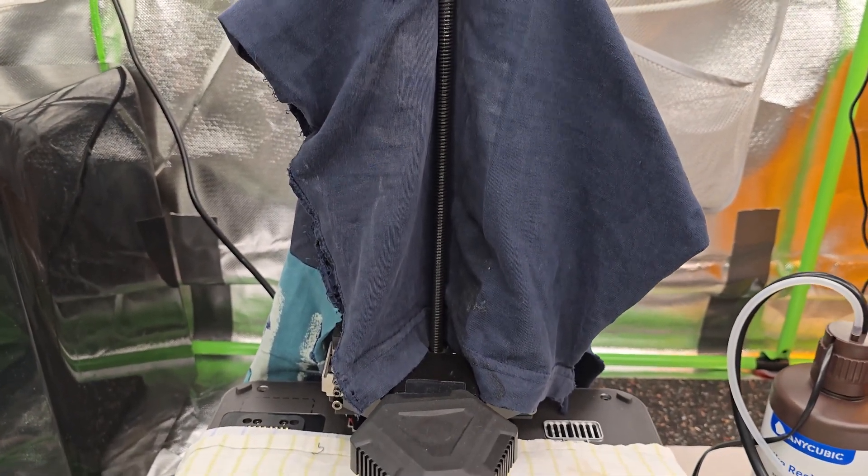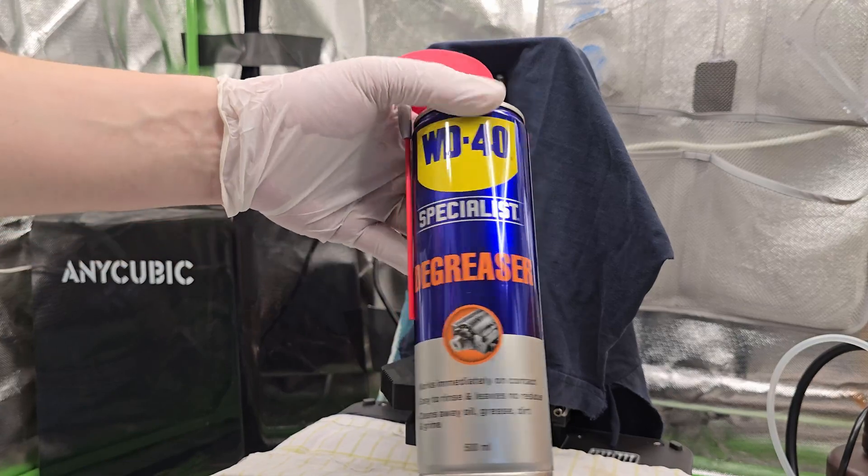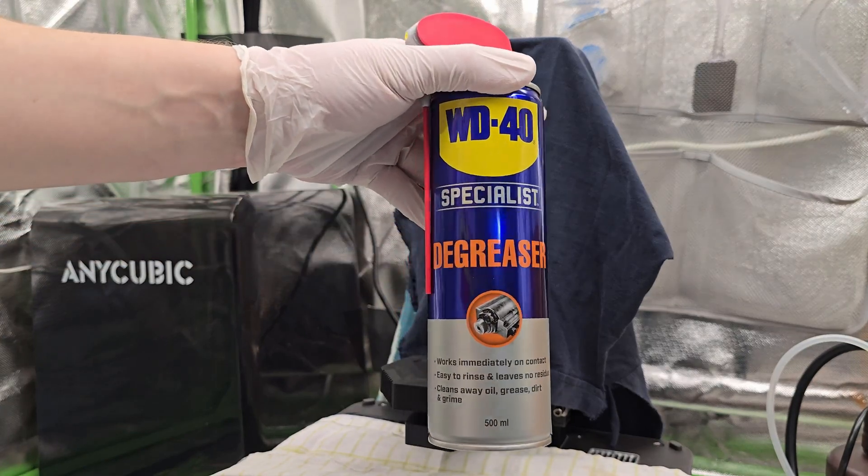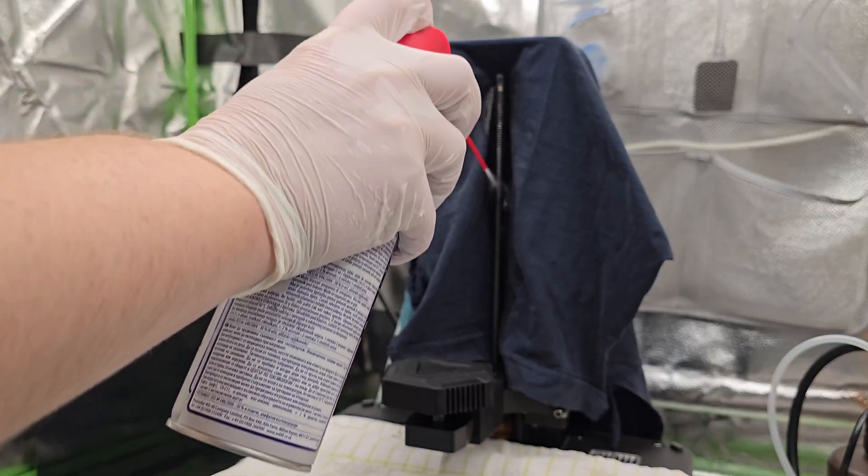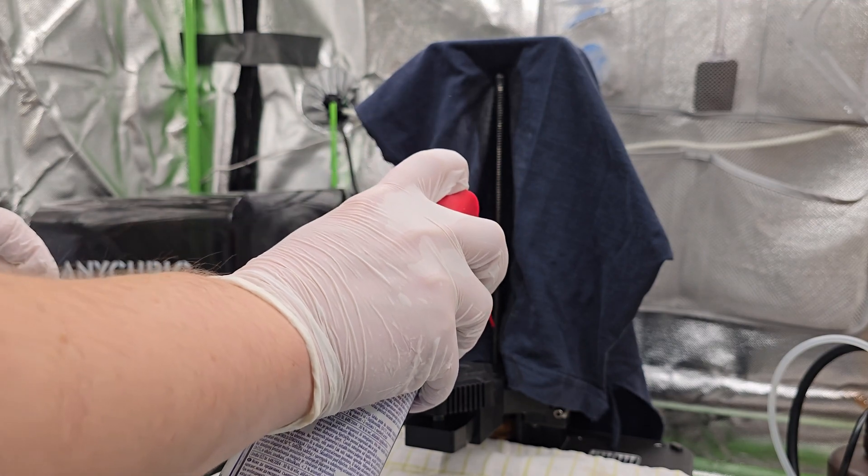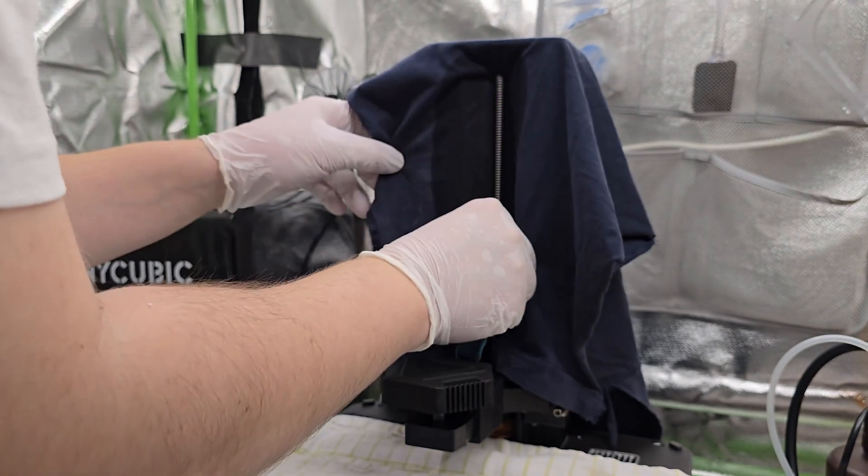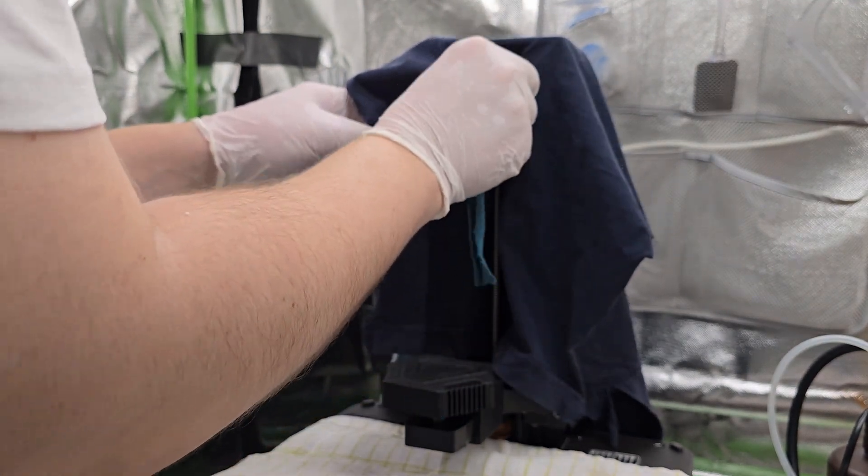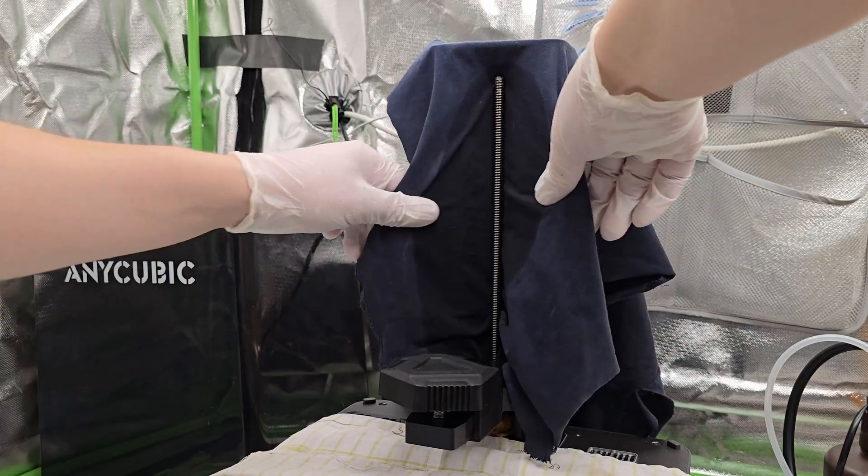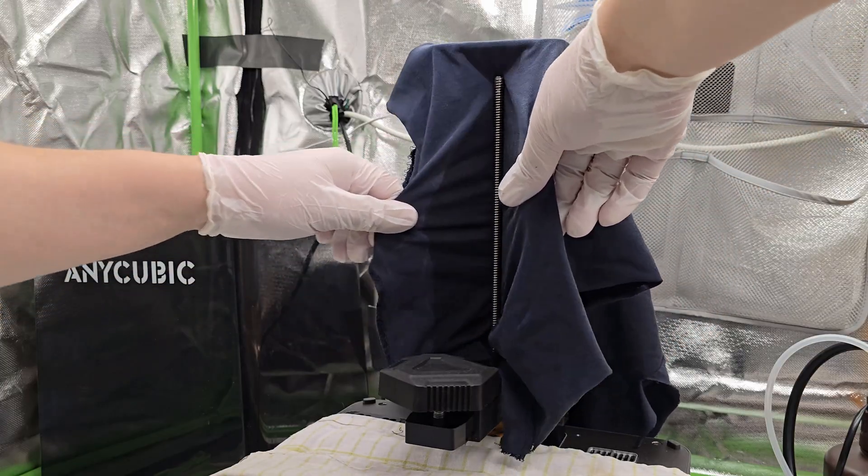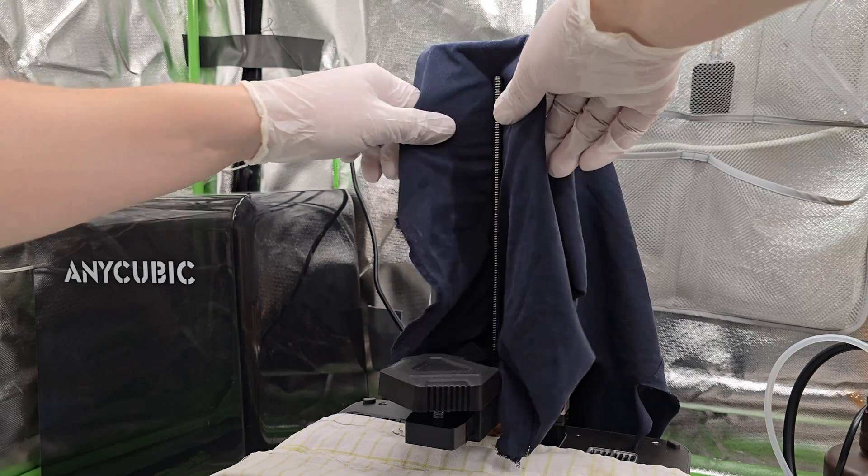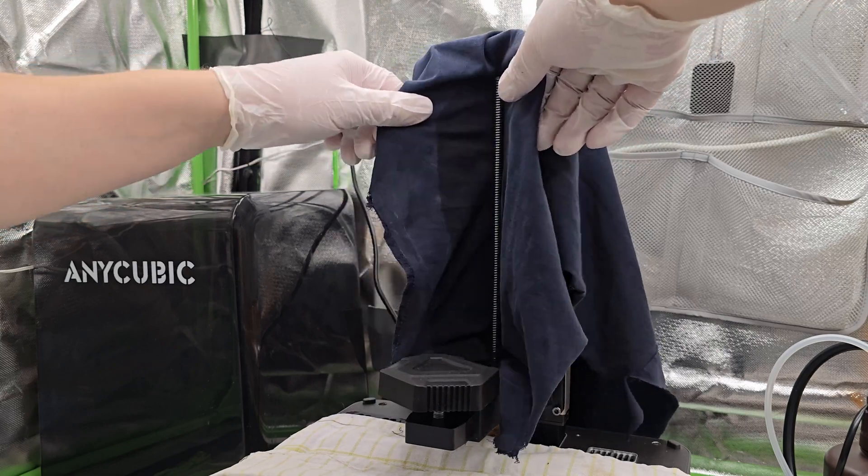So let's start by cleaning the z-rod. I use WD-40 degreaser, and you can spray it directly on the rod or into a cloth, whichever you prefer, just make sure to wipe it down thoroughly. If you cannot get with your hand to the back side of the z-rod, use the cloth you placed behind it to clean the back side. Spray it with degreaser if you didn't do that already, and just rub it left and right.